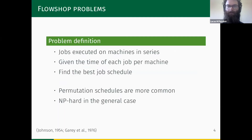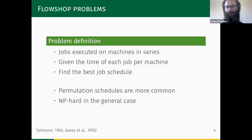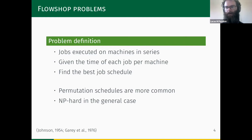For background on flow shop problems: these model a scenario where you have a set of jobs to be executed on a series of machines, usually a production line. You are given the processing time of each job on each machine, and the objective is to find the best job schedule. This schedule is usually a permutation, and the problem is NP-hard in the general case.